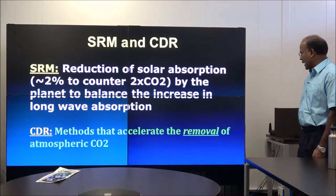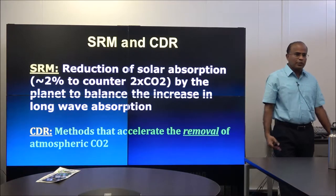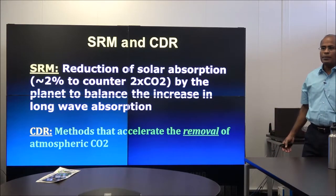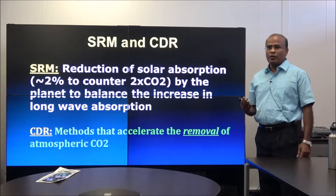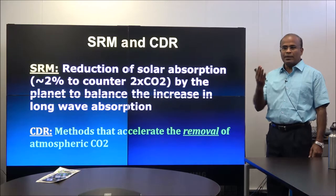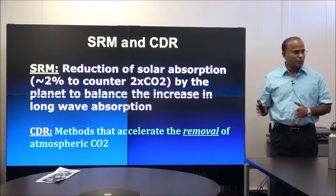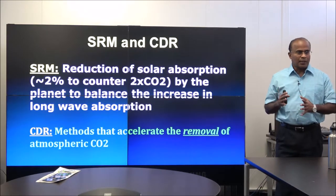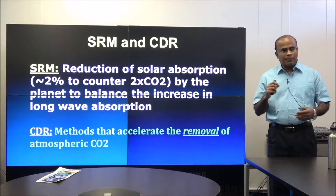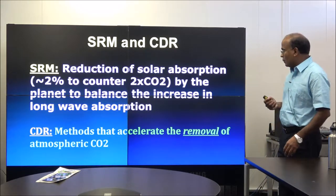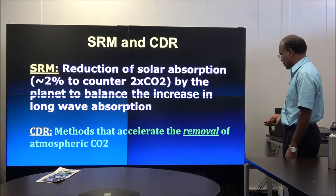CDR methods accelerate the removal of CO2 using natural carbon sequestration processes that already remove carbon from the atmosphere. Roughly 50% of what we emit is absorbed naturally — about 25% goes into the ocean and 25% into the terrestrial biosphere — so only 50% accumulates in the atmosphere. The question is: can we manipulate these natural processes to accelerate CO2 absorption?